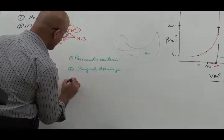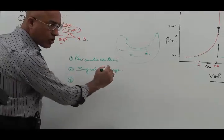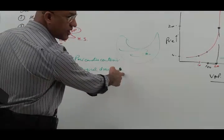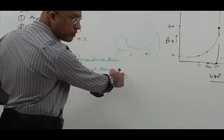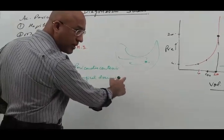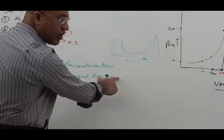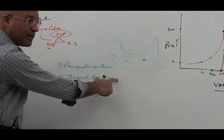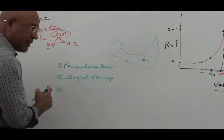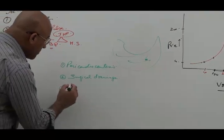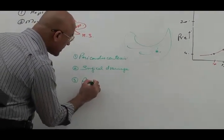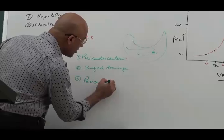That is subxiphoid limited thoracotomy. These cases are done when recurrent, or you want to remove as complete as possible, or there is loculated, or you also want a tissue sample like diagnosis of tuberculosis. Then pericardial window.